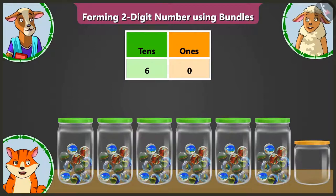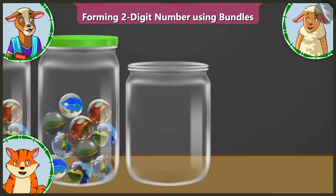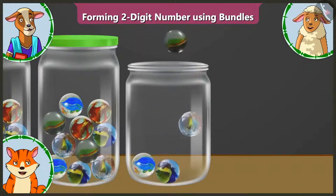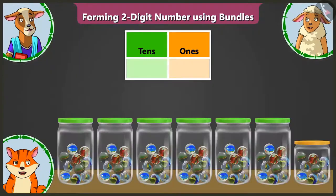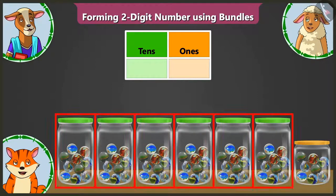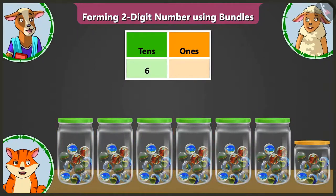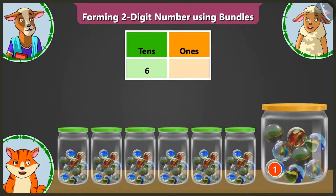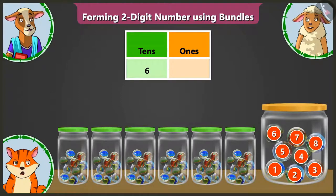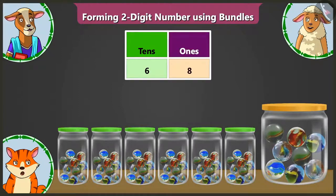We understood. Now look — in this empty seventh jar, I am putting some marbles in it. Now tell me, Lily — how many marbles are there in total? In the first six jars, there are groups of ten marbles each, meaning six groups of ten. That is why in the tens box, we have to write six. Well done, Lily. Now in the seventh jar, we have put one, two, three, four, five, six, seven, and eight marbles. So in the ones box, we have to write eight.